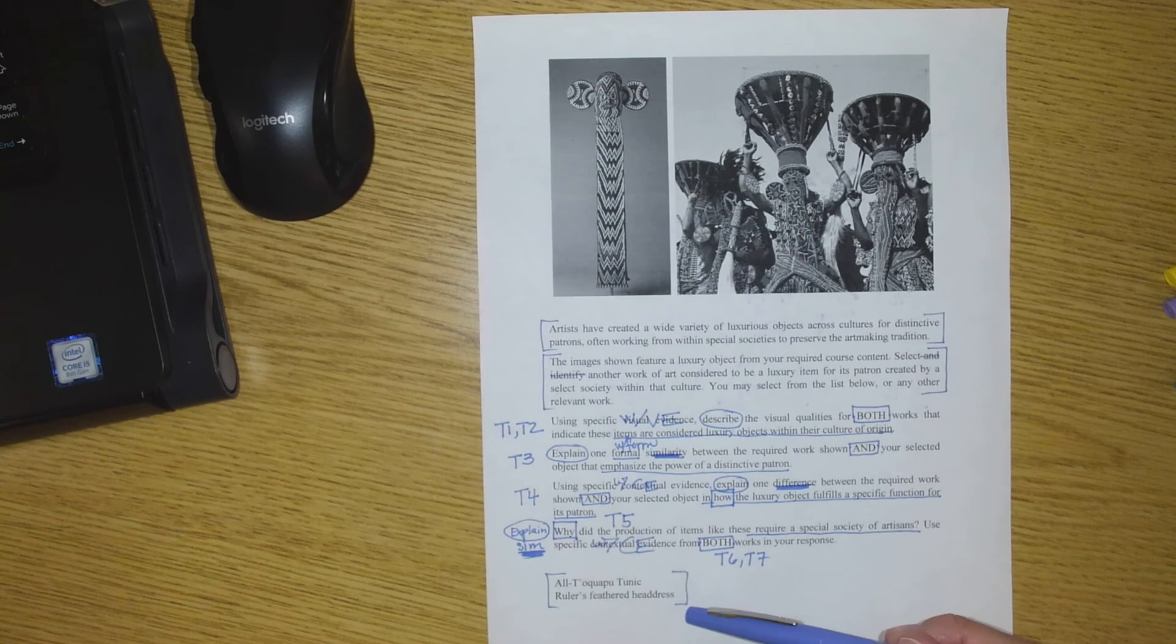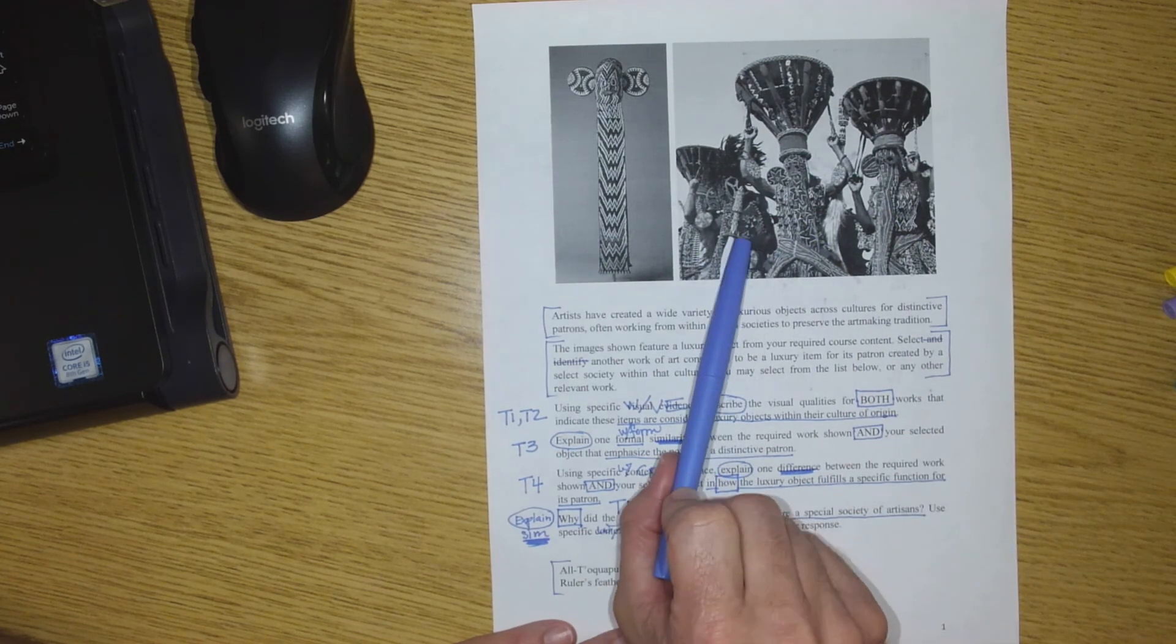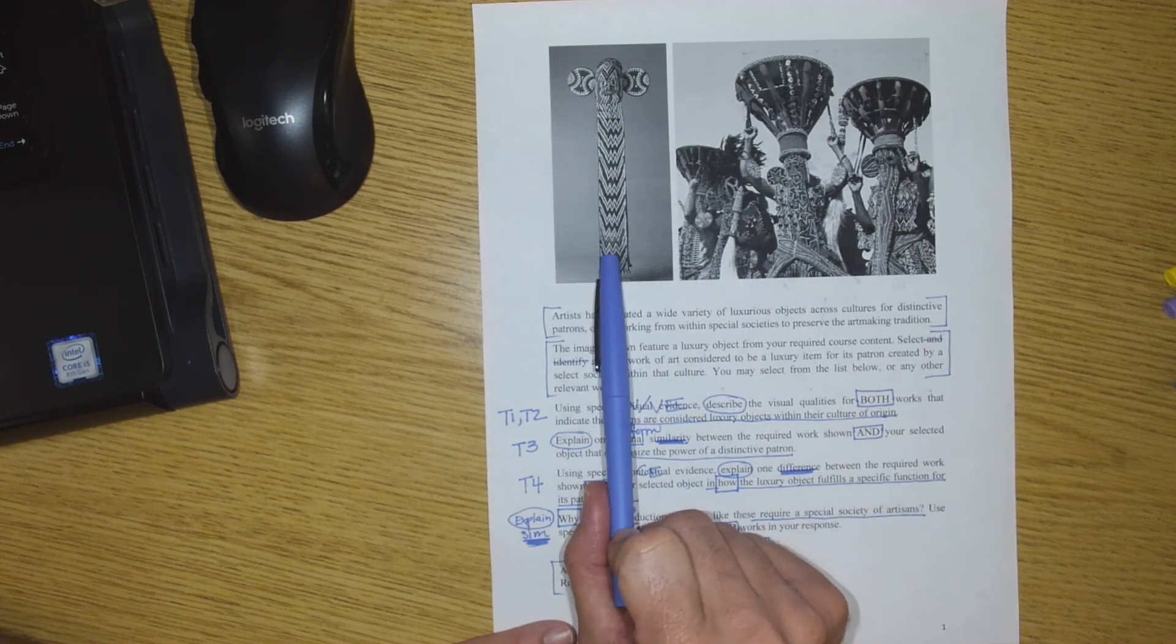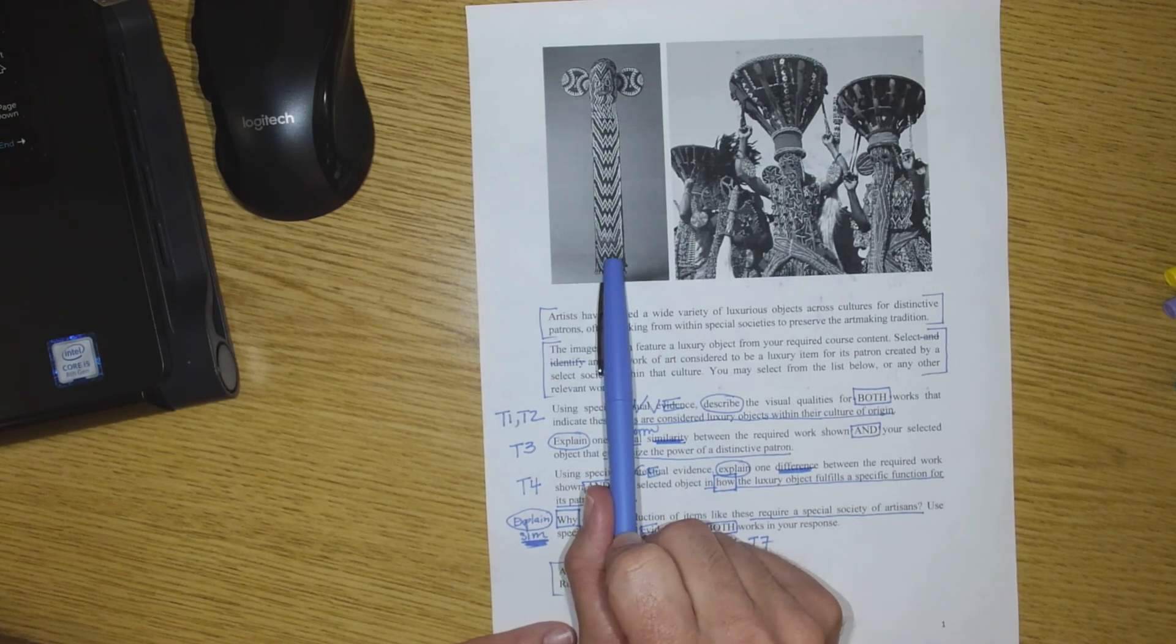Select and identify—I crossed out identify because you'll probably just see select or choose—another work of art considered to be a luxury item for its patron created by a select society within that culture. We can see right away those are just setting up our theme and telling us what we can do. Down at the bottom, I've got Altaka Putunik and ruler's feathered headdress.